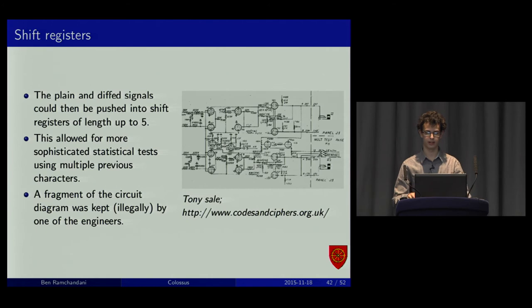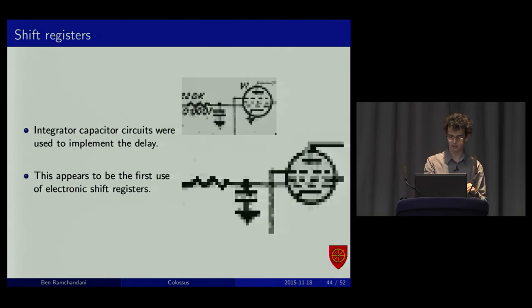The Mark II also added shift registers. This was completely new. It had never been done before. We invented shift registers, I guess. Length up to five, it allowed functions on the last five characters or the last five diff characters. We can actually zoom in on this. You can see this was a diagram that was kept legally by one of the engineers and recovered when doing the rebuild project. You can see the integrated capacitor circuit, resistor, capacitor attached to ground, and a pentode valve. That's like a clocked amplifier, so it's only high if the clocked pulse is also high.